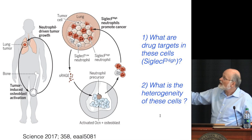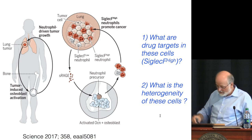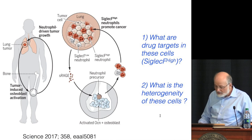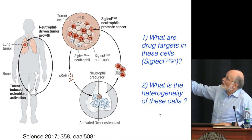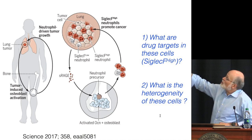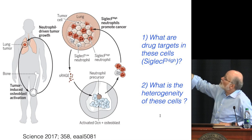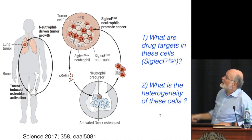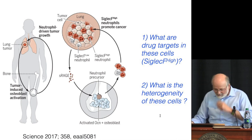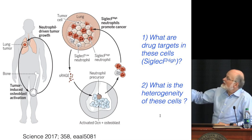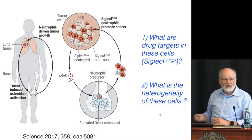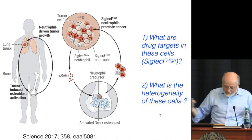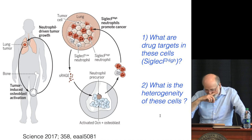Primary human lung cancers send out secret long-range signals to tell the bone marrow to start making a unique neutrophil that gets released from the bone marrow, homes back into the cancer, and exerts cancer-promoting function. The tumor cells secrete a signal we know - S-RAGE, soluble receptor for advanced glycation end products - that tells these cells to populate the cancer and fuel its own growth. Really devious. These cells were identified through single-cell transcriptomics. The question now is: what are good drug targets in these cells, which are called cyclic F-high neutrophils in the mouse?